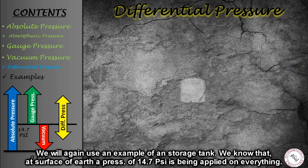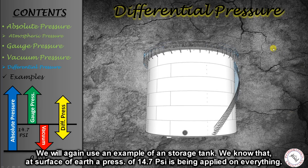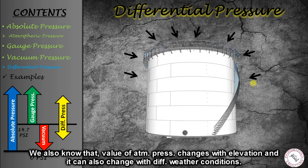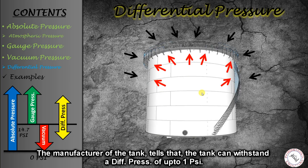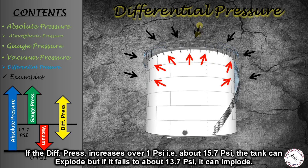To understand differential pressure, take the example of a storage tank. We know that absolute pressure of 14.7 psi — atmospheric pressure — is continuously applied to every object. The manufacturer of a tank tells us that the tank's structural strength is such that if the differential pressure — meaning the difference between outside atmospheric pressure and the inside vapor pressure — exceeds a certain limit, say 1 psi, the tank can explode. Conversely, if the internal vapor pressure is 1 psi below the atmospheric pressure, reaching 13.7 psi, the structure can implode.